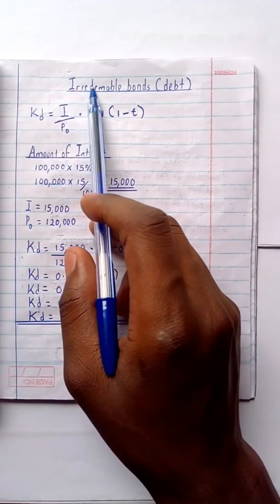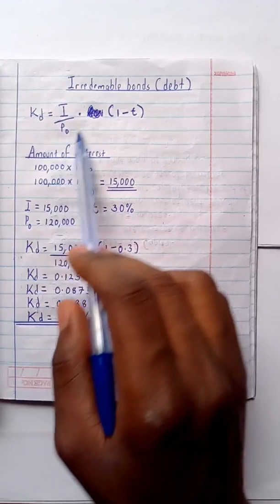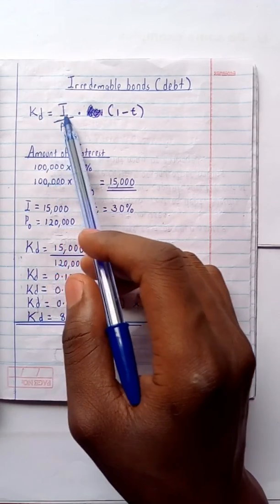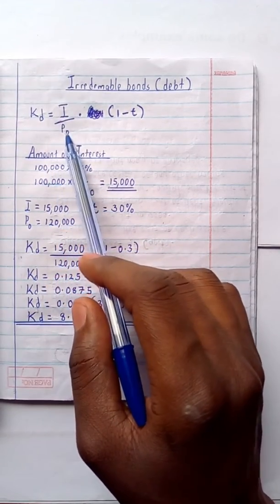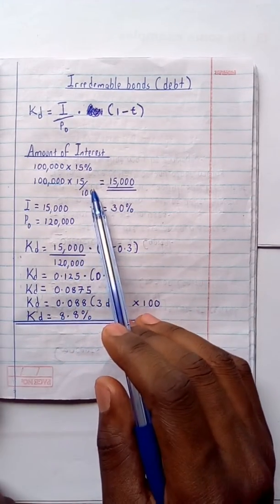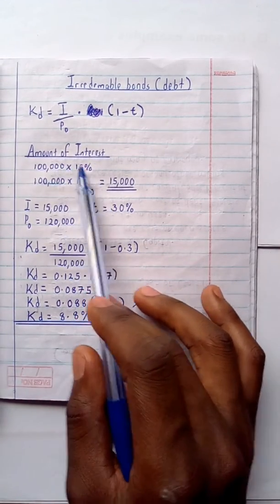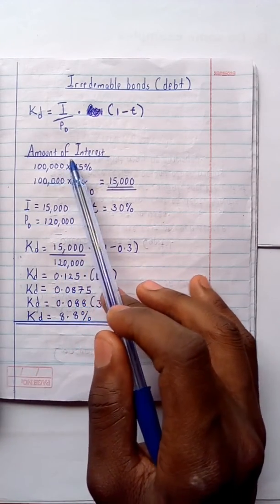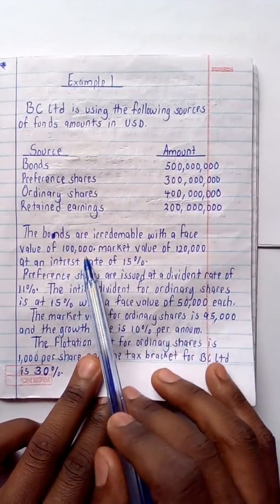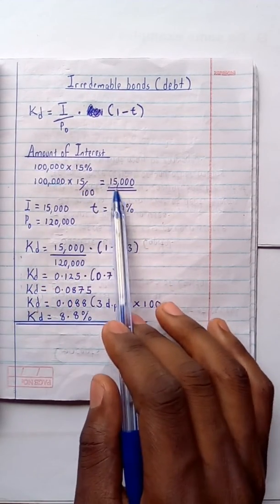Starting with the solution, I'll begin with the irredeemable bonds — that is, irredeemable debt. The formula for cost of debt, subject to a tax shield, is: cost of debt = interest divided by market value, times (1 − tax rate). First I need to find the interest amount. The interest rate was 15%, so I multiply the face value of 100,000 by 15% to get interest of 15,000.